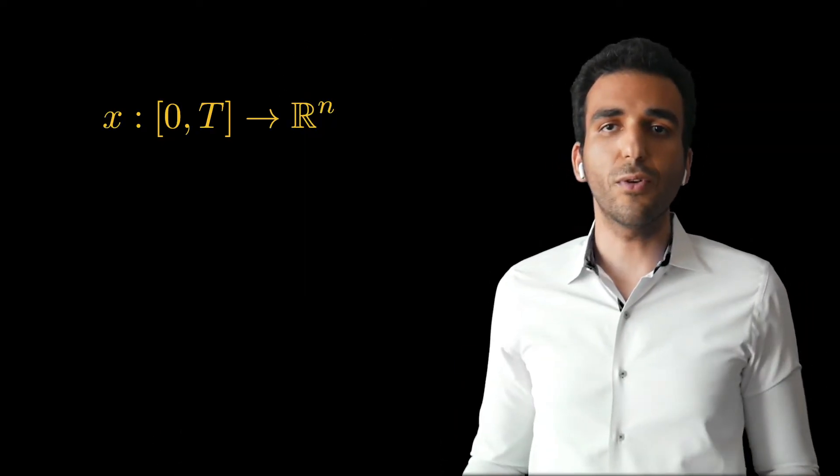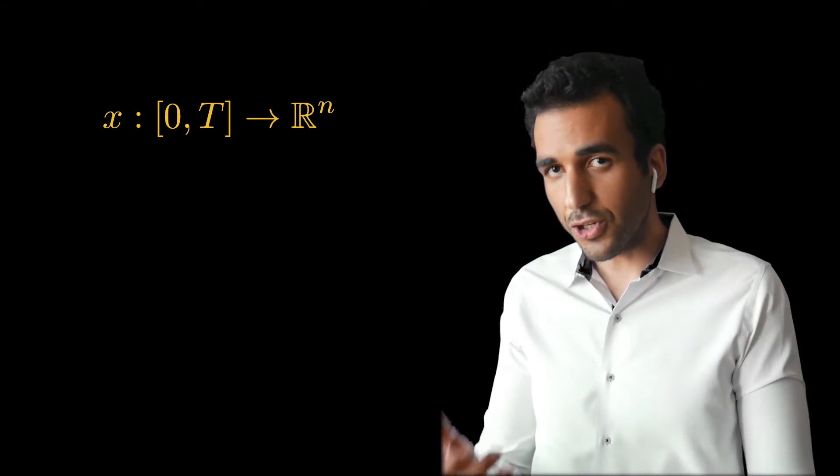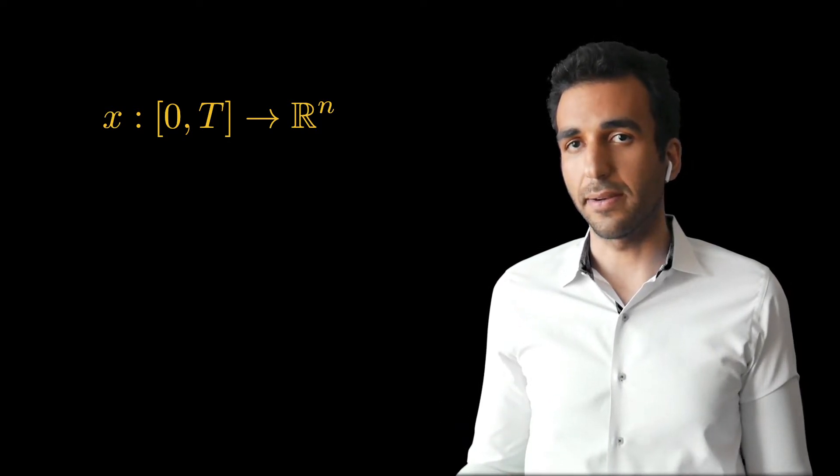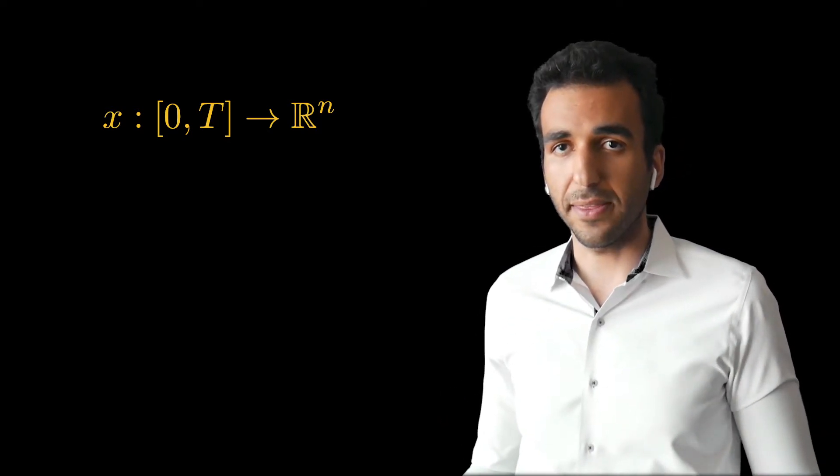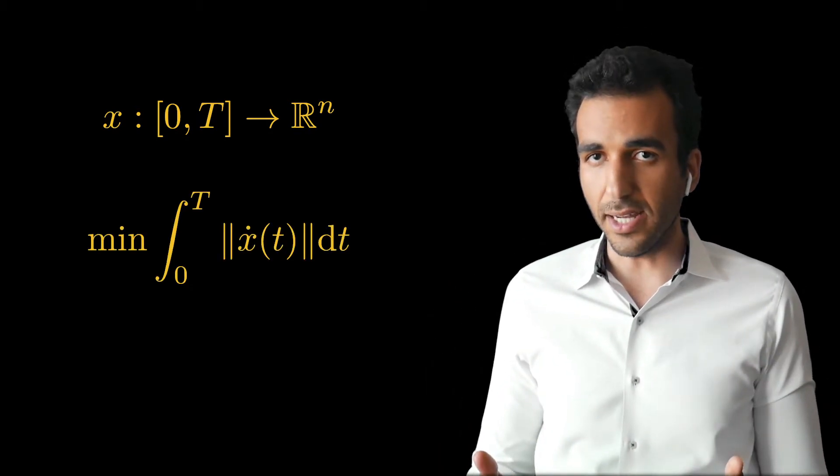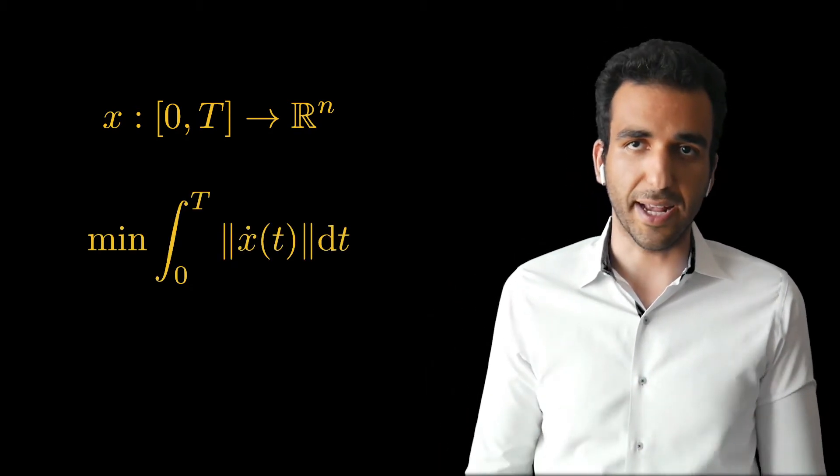Now let me formulate the motion planning problem as an optimization problem. What I'm looking for is a path, a function that maps the interval of time zero to capital T to R^n. In fact I want the shortest path, so I'm going to minimize the integral over time of the L2 norm of x dot, which is the time derivative of x.